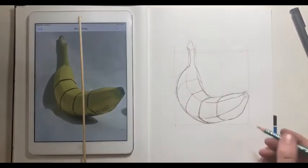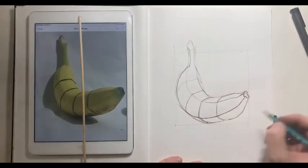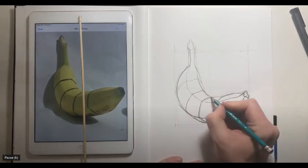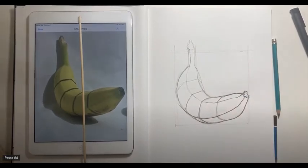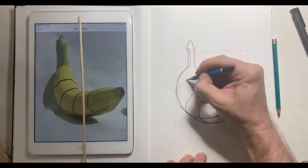Now I'm reinforcing the contour lines and going into the cross contour lines with a 6B pencil to really give it the sense that the object is dimensional. Those darker lines are jutting out at us and the lighter lines are receding away from us.